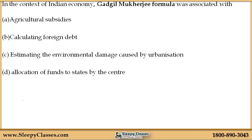First question: In context of Indian economy, the Gadgil Mukherjee formula was associated with? Option A is agriculture subsidies. B is calculating foreign debt. C is estimating the environmental damage caused by urbanization. And D is allocation of funds to states by the center.